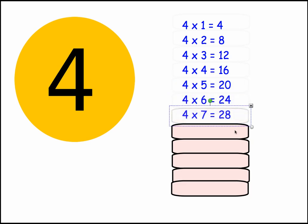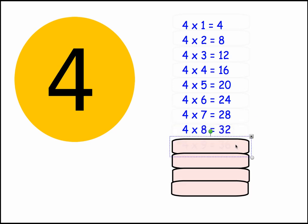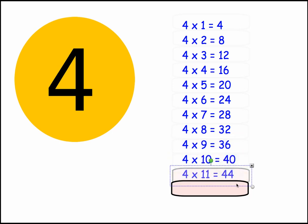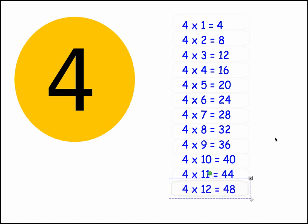4 times 7 equals 28, 4 times 8 equals 32, 4 times 9 equals 36, 4 times 10 equals 40, 4 times 11 equals 44, and 4 times 12 equals 48.